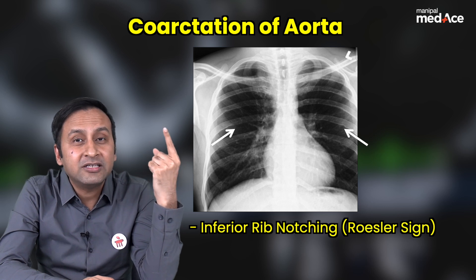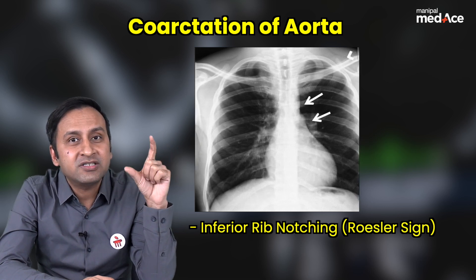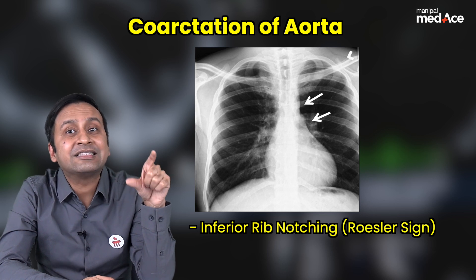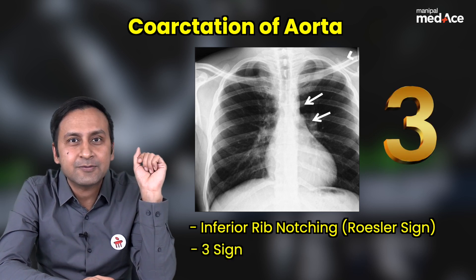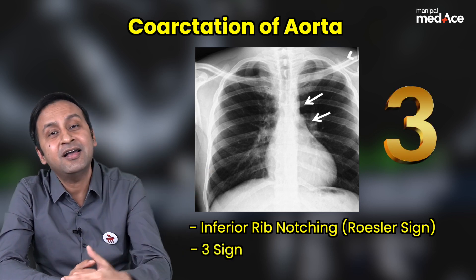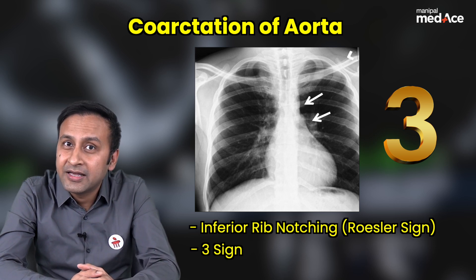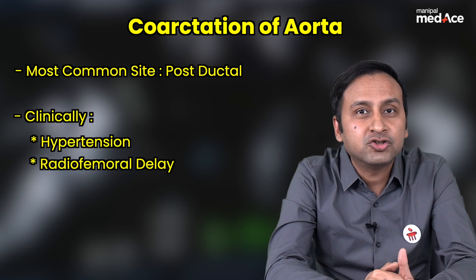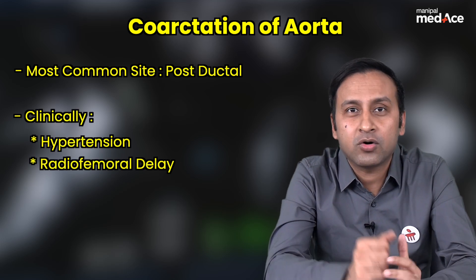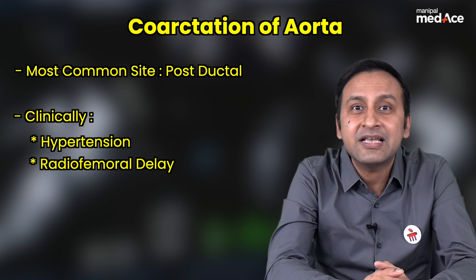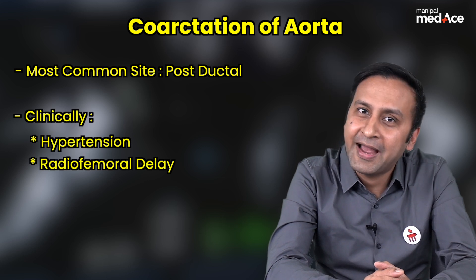Look at the other signs — look at the shape of the aorta. In coarctation, the aortic shadow would be narrow, giving us this three sign or three appearance. If we do a barium swallow, we will get a reverse three appearance. The most common type is post-ductal coarctation, and the important clinical features are radiofemoral delay and hypertension. This is all about congenital heart diseases and their radiographic appearances.